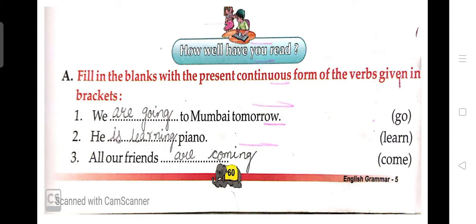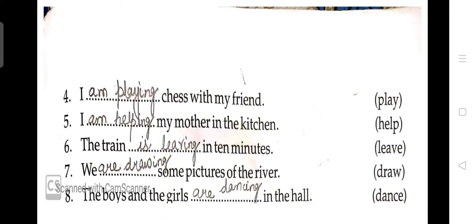Third: 'All our friends are coming' — 'are coming' because it is a plural subject. Fourth: 'I am playing chess with my friend' — 'I am.' Fifth: 'I am helping my mother in the kitchen' — 'help' plus -ing gives 'helping.' Sixth: 'The train is leaving in ten minutes' — singular subject, so 'is.' Then: 'We are drawing some pictures of the river.' And: 'The boys and girls are dancing in the hall.'